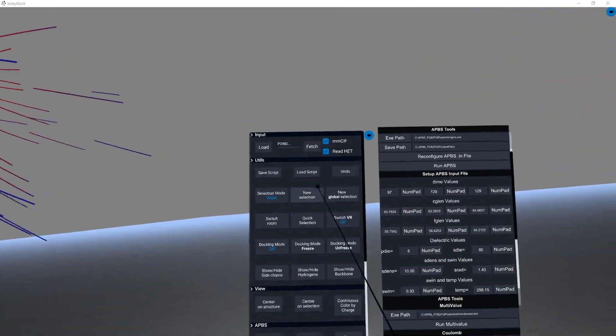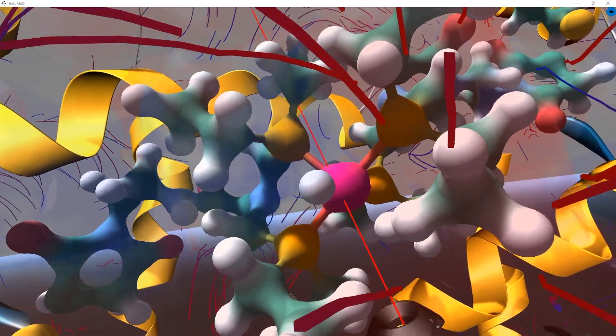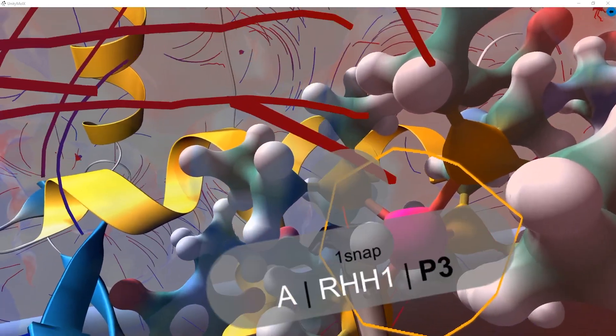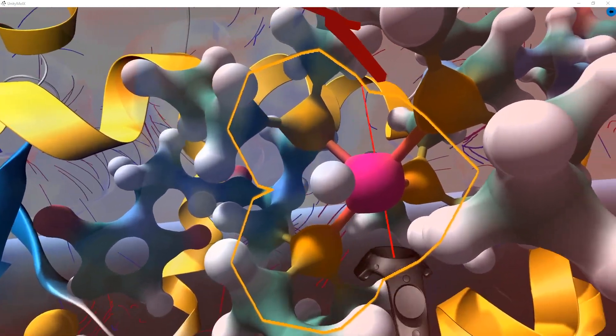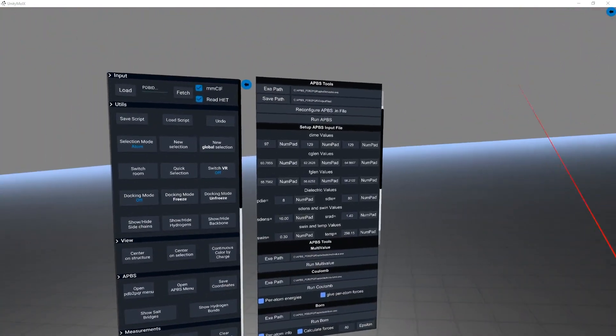Since our goal is to compare the potential at the rhodium and phosphorus atoms for the complex outside of the protein to the complex inside the protein, we now need to complete this process for the rhodium complex inside the artificial enzyme.